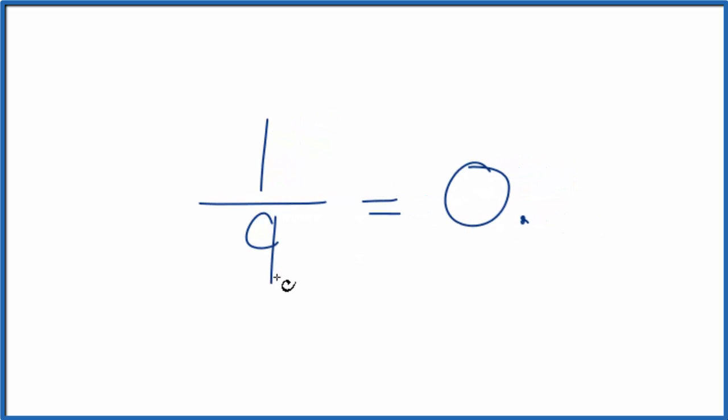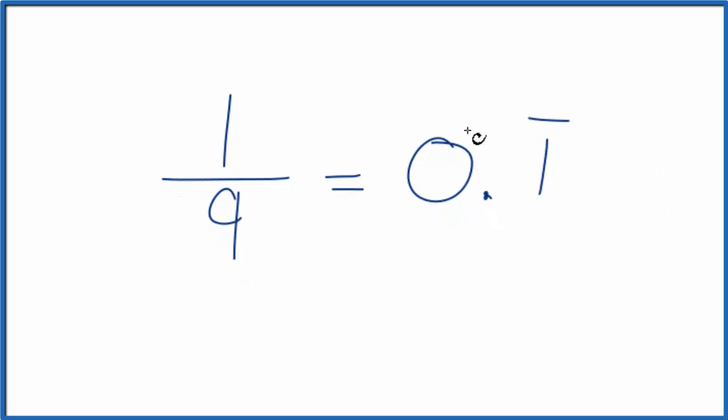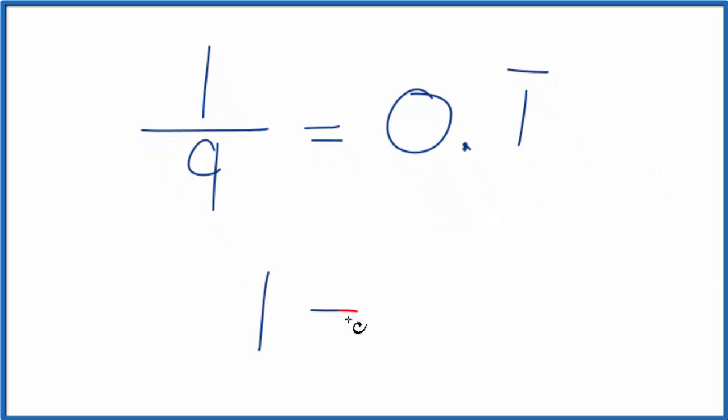And if we divided 1 by 9 in a calculator, we'd get 0.1, and that 1, it would just keep repeating. In essence, what we're trying to do is we want to know if we take 1 and we divide that by 9, what do we get? So we could do this division longhand. Let's do that.